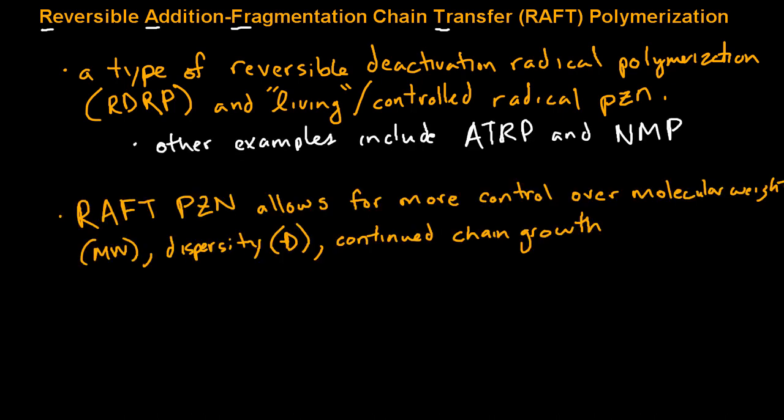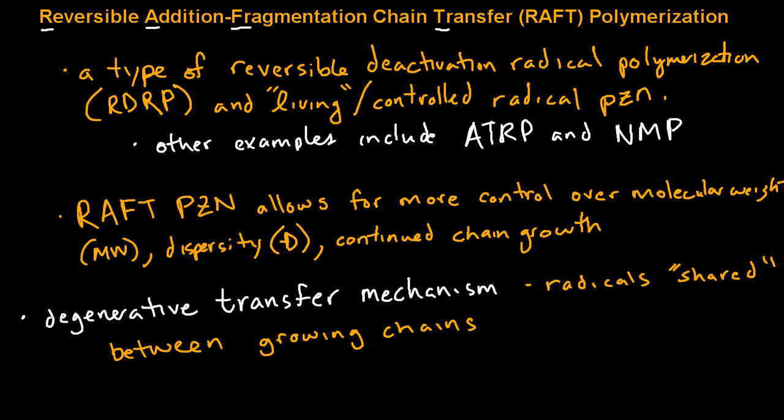RAFT polymerization is a useful technique because it allows for more control over molecular weight, dispersity, and continued chain growth for either block copolymers or other architectures such as stars. The mechanism through which this occurs is through a degenerative transfer mechanism, in which the radicals within the system are shared equally between growing chains. I'll talk more about how this occurs later in the video.